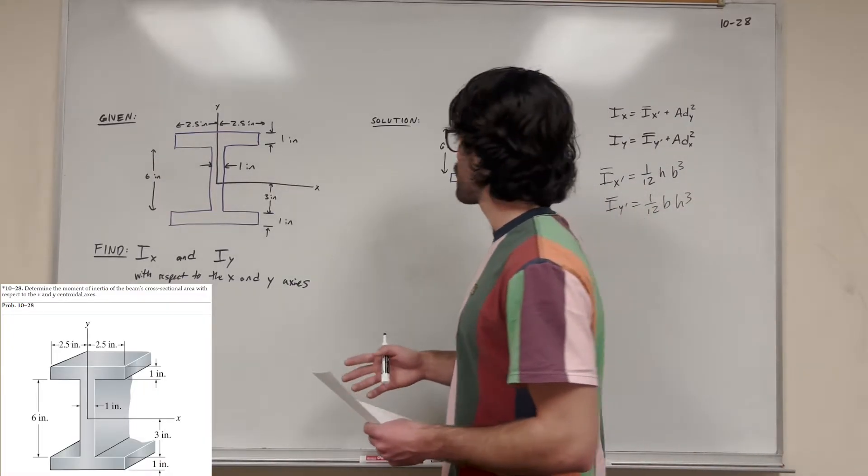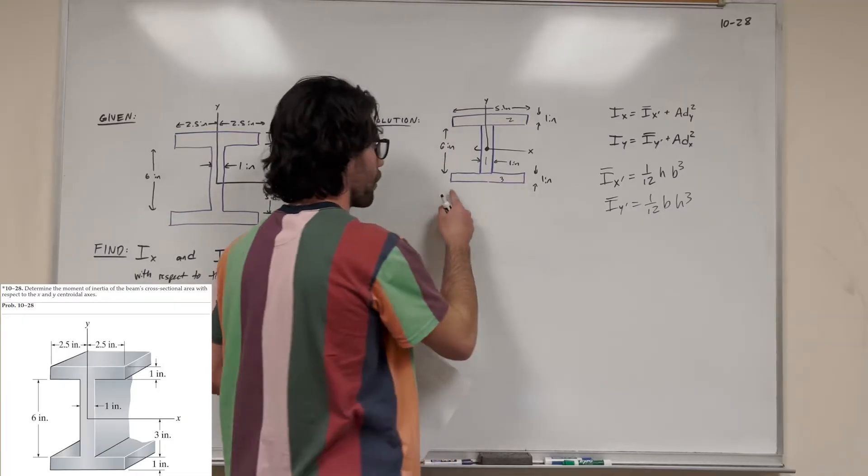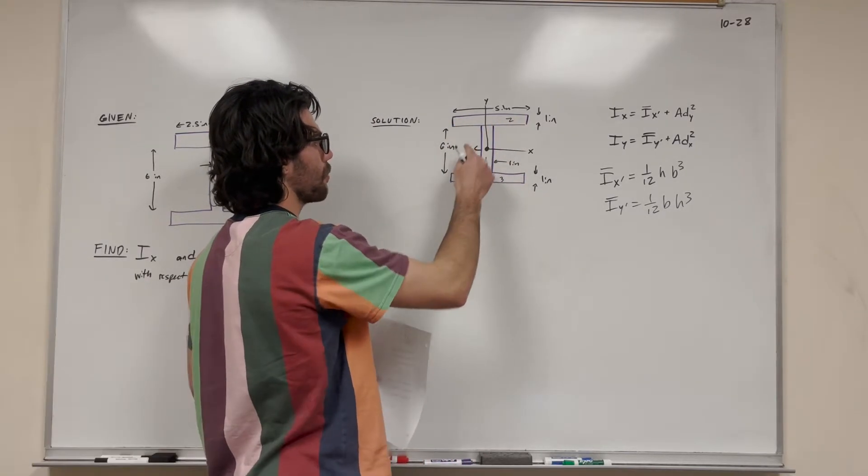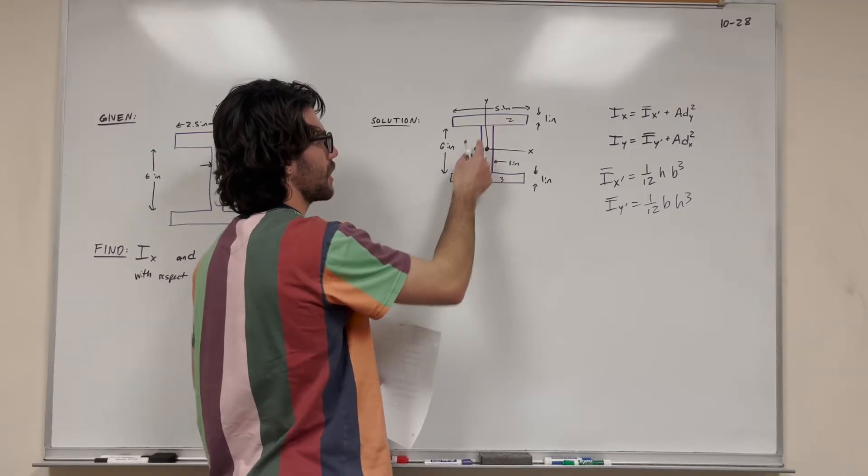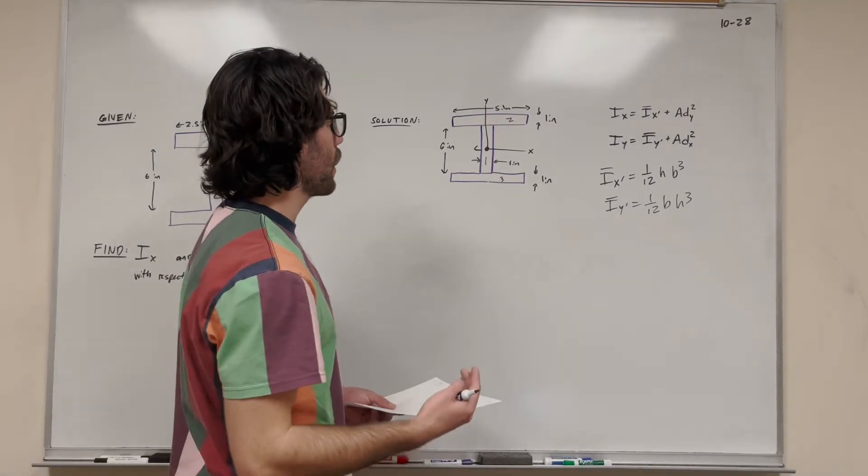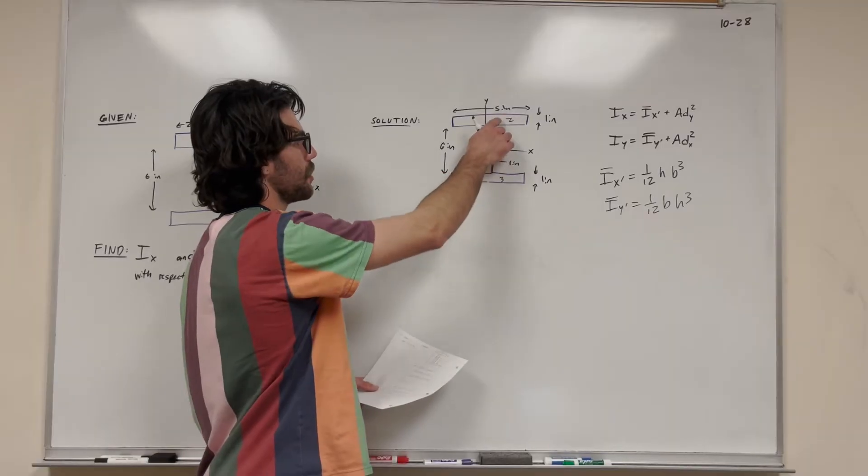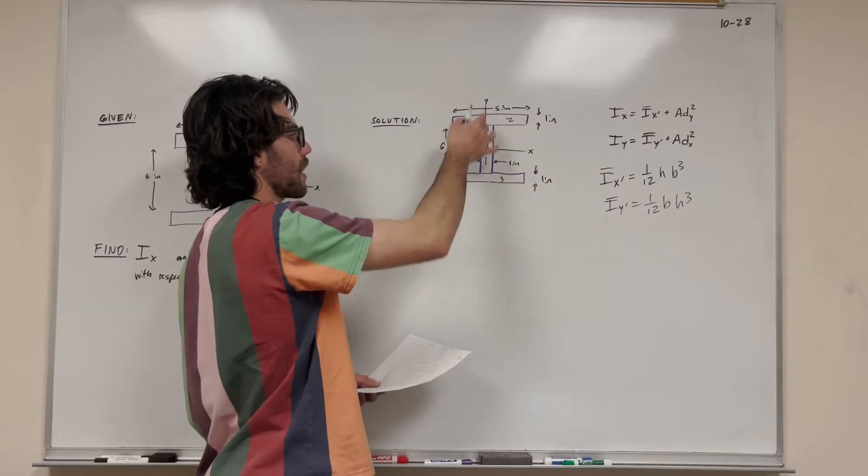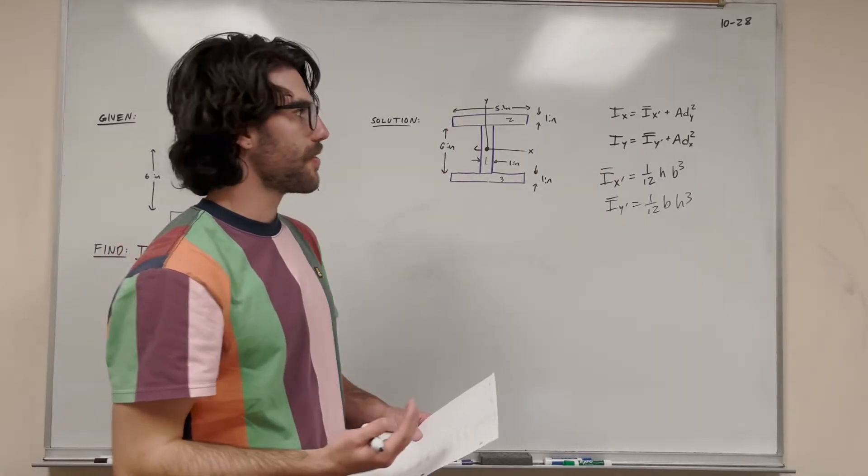So what do we have? I went ahead and broke it up into three simple shapes - this rectangle on top, this rectangle on bottom, and this vertical rectangle. I labeled them 1, 2, 3. The shape is symmetrical across the x-axis and y-axis, so that's going to make things pretty easy for us.